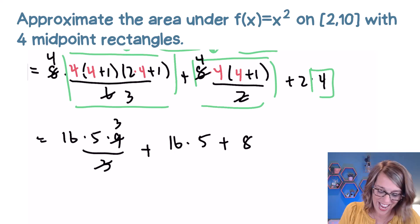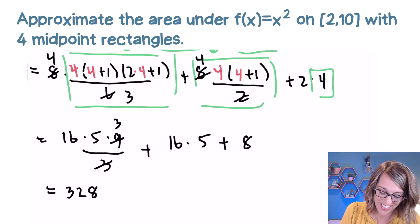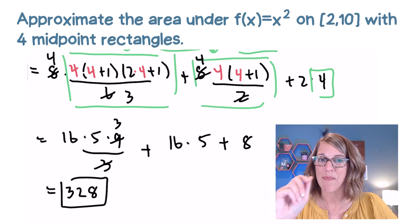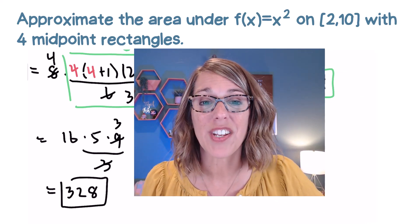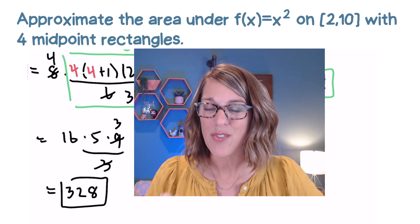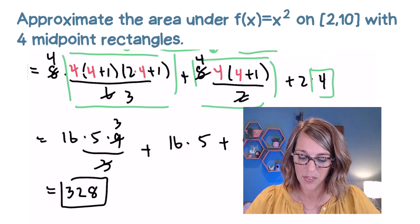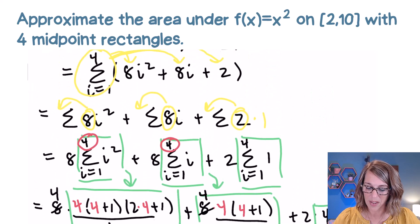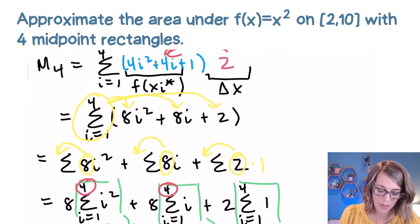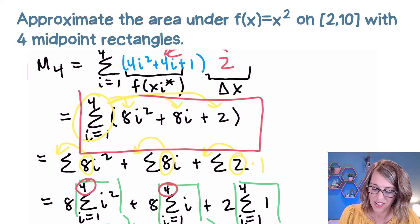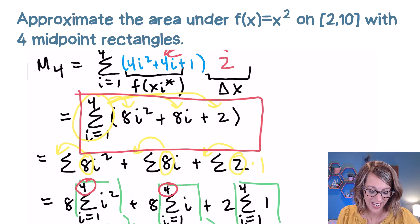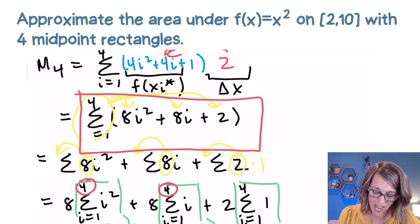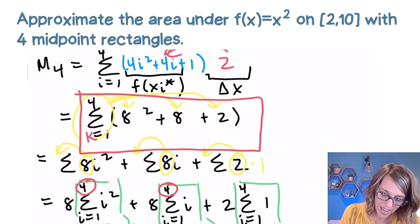We get the same answer of 328 — great! But I promised one more method. The last method is to do the summation on the calculator; you still need to set up the Riemann sum. Scrolling back through my work, here's the Riemann sum. I want to replace all the i's with k so it doesn't get confused with the imaginary unit.